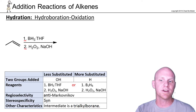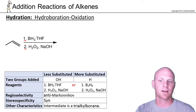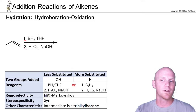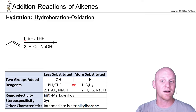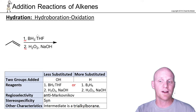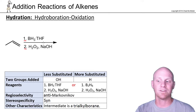The reagents are BH3·THF. BH3 is called borane. THF is a cyclic ether with a lone pair of electrons on oxygen that helps stabilize the boron. Boron is infamous for violating the octet rule — it has an unfilled octet and would love for somebody to make another bond to it, which is kind of what THF does. Borane is highly reactive, and THF calms it down a little bit.